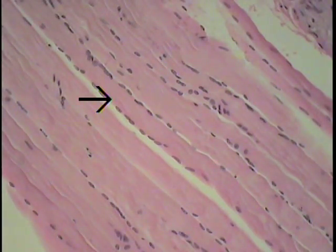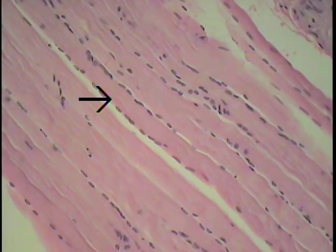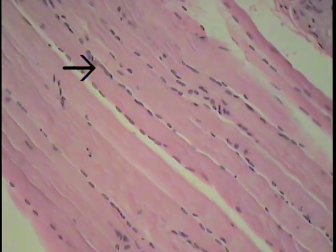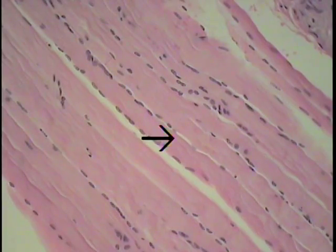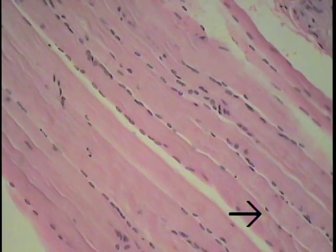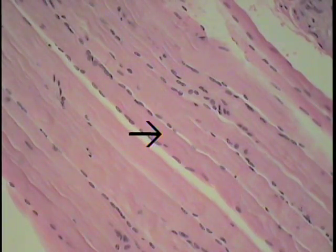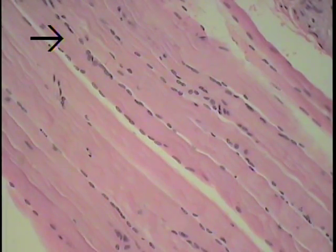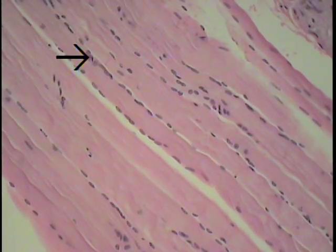This is the longitudinal section through a mass of skeletal muscle cells or fibers. The arrow is now in the center of one of these large, giant, multi-nucleated cells, tracing it along its length. So this entire structure is a skeletal muscle fiber or cell. They are very large cells, much like a cylinder, and may contain several hundred nuclei.